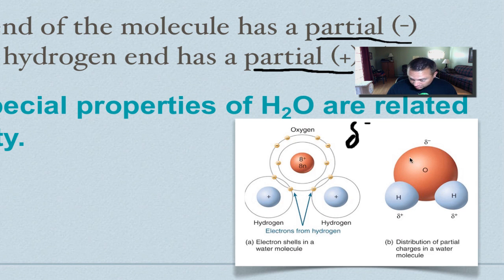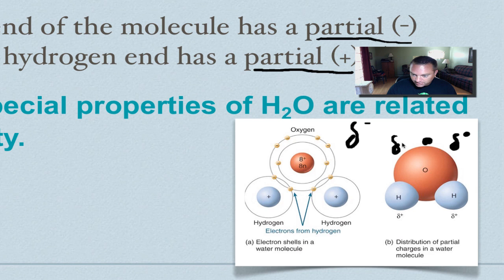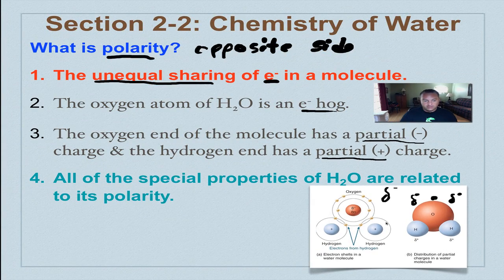Actually, the drawing shown is a little off. You see these pairs of electrons — there are actually four poles. It's completely balanced. You have two negatives and two positives on a water molecule. This is very unique for water, and all of the special properties of water are related to its polarity.